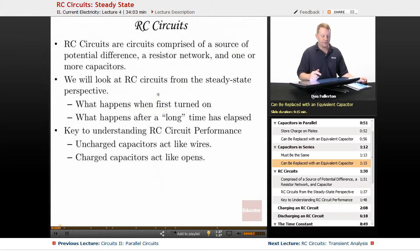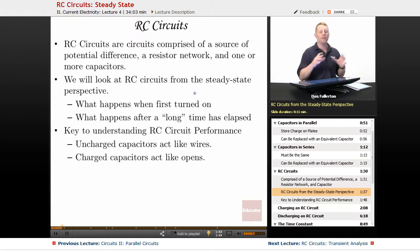So as we get into RC circuits specifically, RC circuits are comprised of a source of potential difference to make the current flow, a resistor network, and one or more capacitors. We're going to look at RC circuits from the perspective of what happens when they're first turned on and what happens after a long time. What's in the middle we're going to leave till the next lesson.